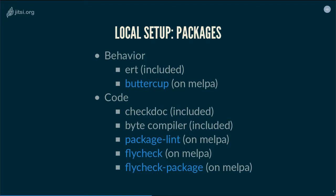For quality of code, you have CheckDoc, which is included and will check all your doc strings. You have the byte compiler, which produces warnings telling you what seems wrong in your code base. You have PackageLint, which was originally meant to check packaging rules but has grown into something like an Emacs Lisp linter with many rules that go beyond packaging. And you have FlyCheck, which doesn't do checks on its own but will run the previous three tools and highlight the parts of your code that aren't good enough. The FlyCheck-package-lint package integrates PackageLint within FlyCheck.